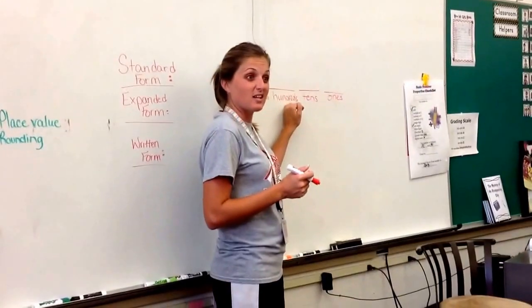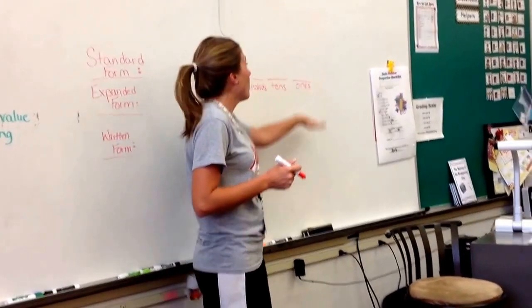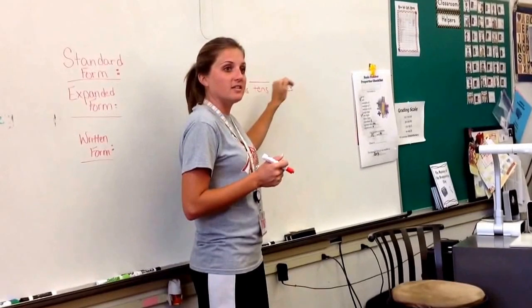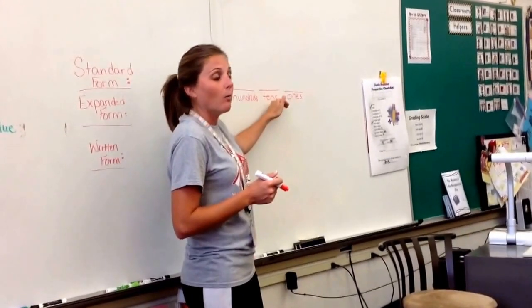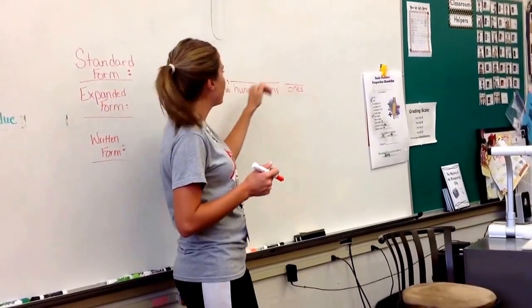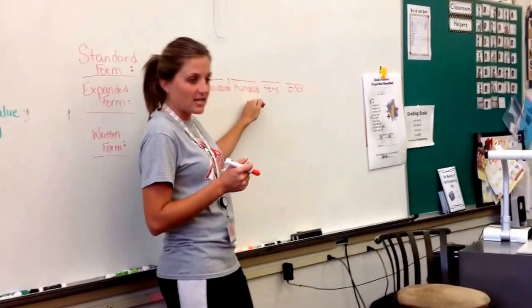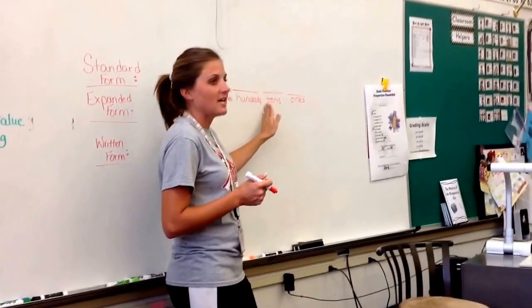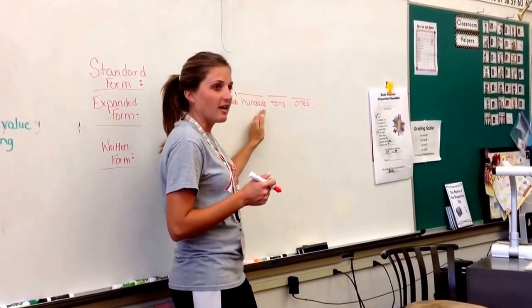Tens and hundreds. We sang a song. Remember it said, ones are on the right, then the tens are next in line. Once more to the left, and it's hundreds every time. Ones, tens, hundreds.